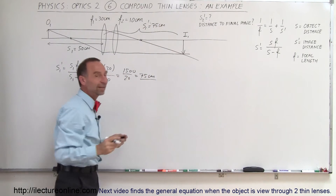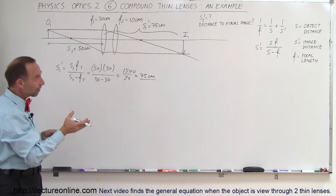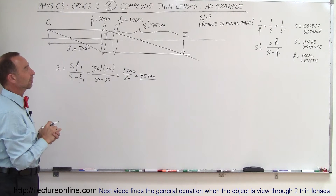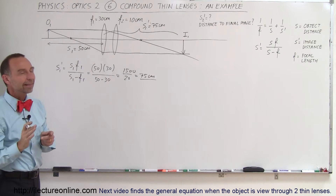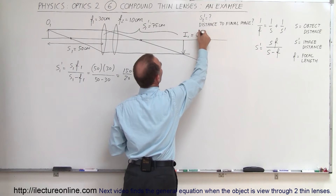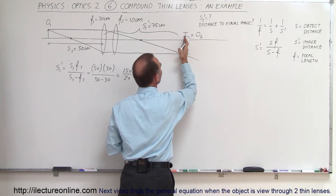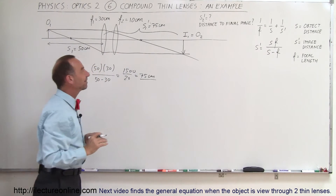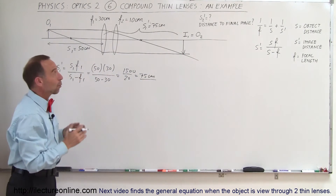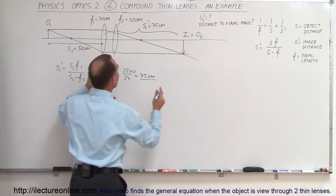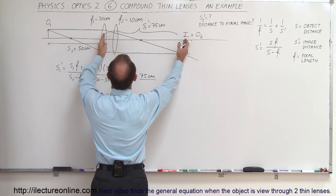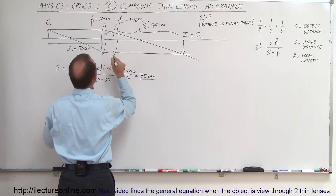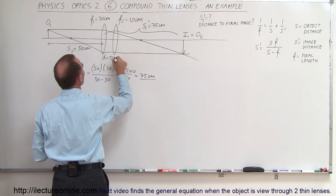S1 prime equals 75 centimeters — that's the location of the first image from the first lens, given the object is 50 centimeters in front of the first lens. That first image now becomes the object to the second lens. If this object is 75 centimeters behind the first lens, we subtract the distance between the two lenses, which is 5 centimeters.